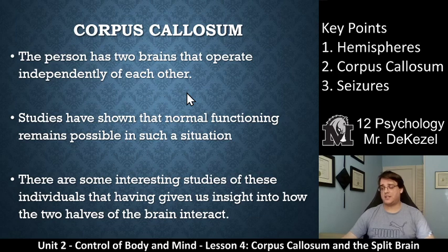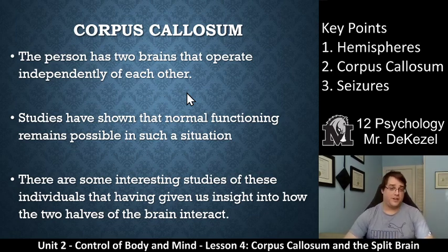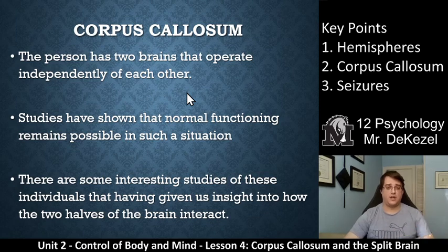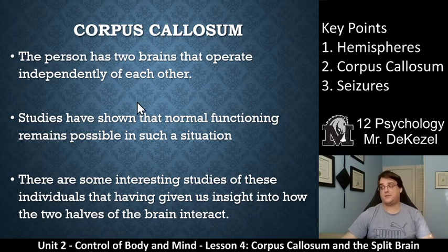That is what our assignment is about — finding out how these two things interact. Studies have shown that a person can live a mostly normal life with this situation. There are some interesting studies, though, that have given us insight into how the two halves of the brain interact. Generally, people can live a normal life. It's not a very common procedure, but studying these people has been very interesting in the field of psychology.